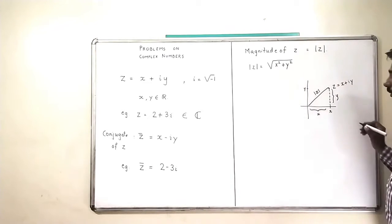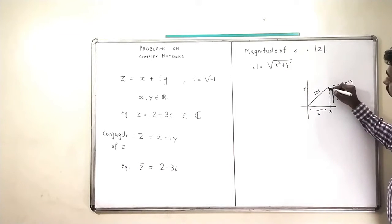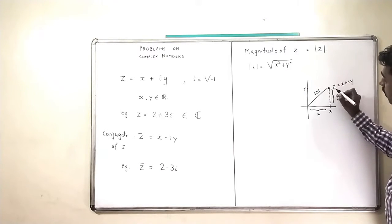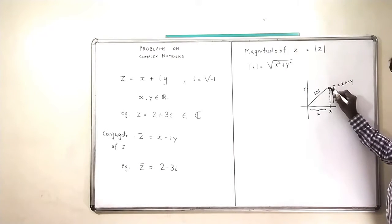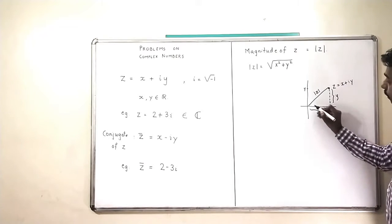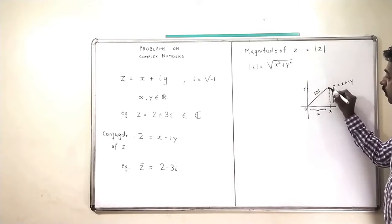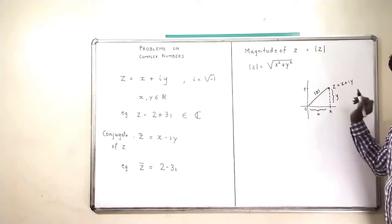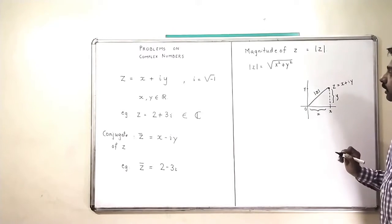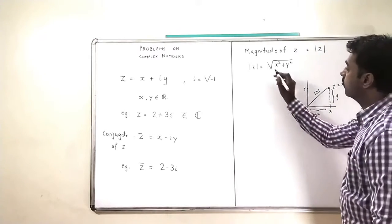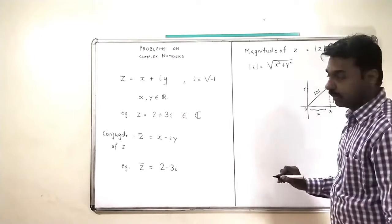So basically, what is the magnitude of Z? The magnitude of Z is nothing but how far the complex number is from the origin, that is mod Z, which is the magnitude of Z.